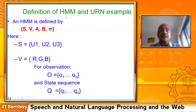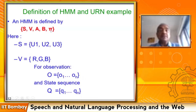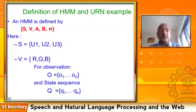Formalizing the hidden Markov model: it is defined by the tuple (S, V, A, B, π) where S is the set of states, V is the set of observations, and π is the initial probability of picking a particular state from S. For the urn example, the states are u1, u2, and u3 corresponding to the three urns.